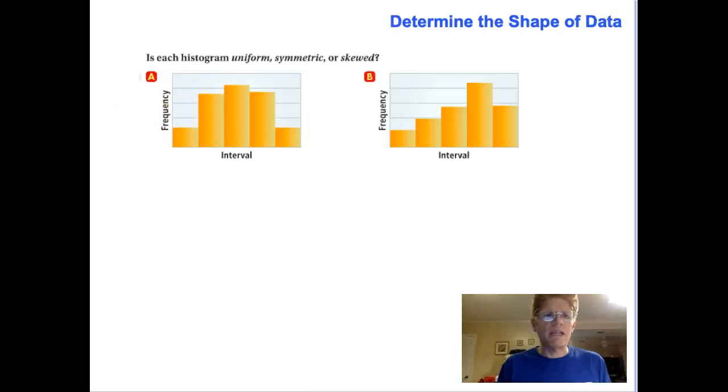So you should be able to quickly recognize which shape this is. Is it uniform, symmetric, or skewed? Well, in this case, they're not all even, so this is going to have to be symmetric, because I can draw a line roughly down the middle and get essentially the same shape on both sides. If I were to fold them in half, they would be the same shape.